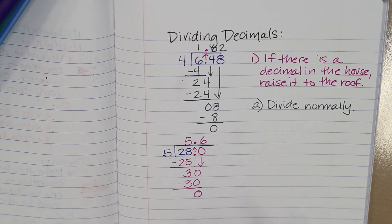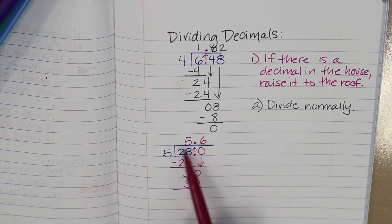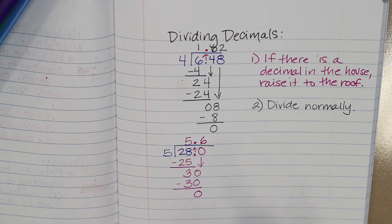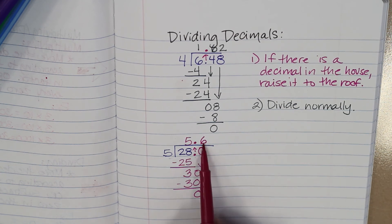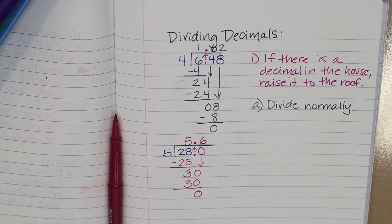You'll want to check for reasonableness — make sure that makes sense. We know that 5 times 5 is 25, and you should have the 6 tenths left over. And that's it.